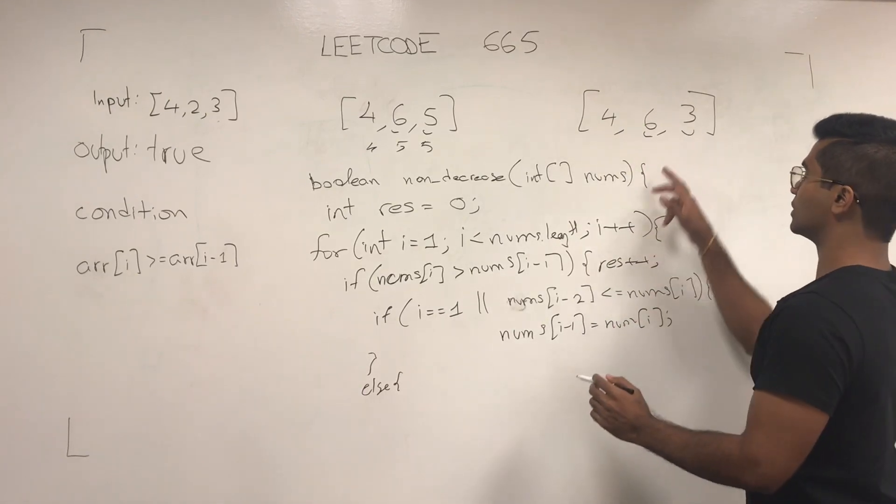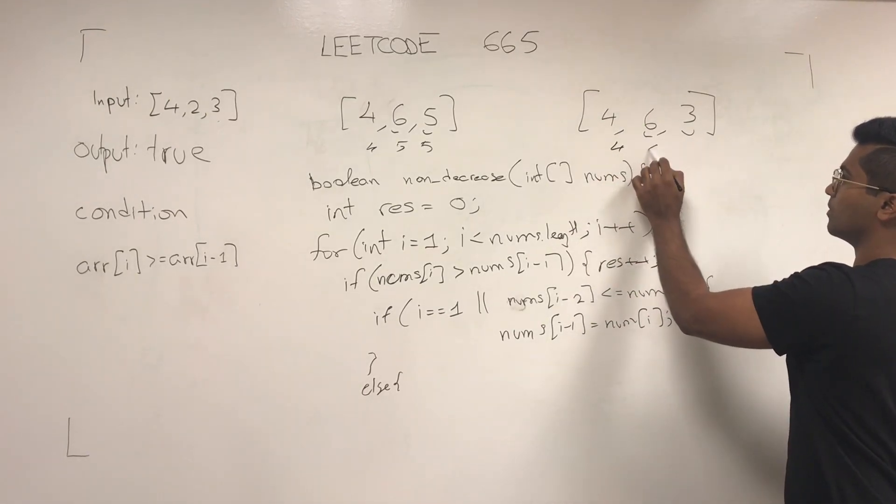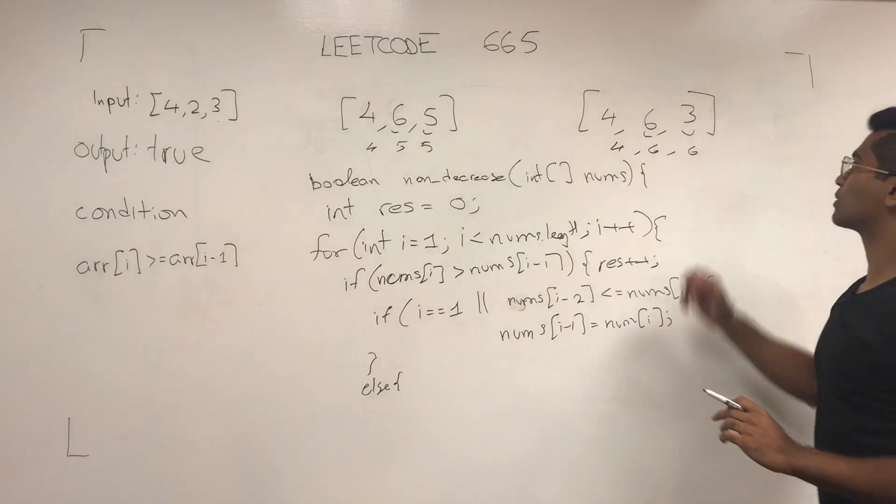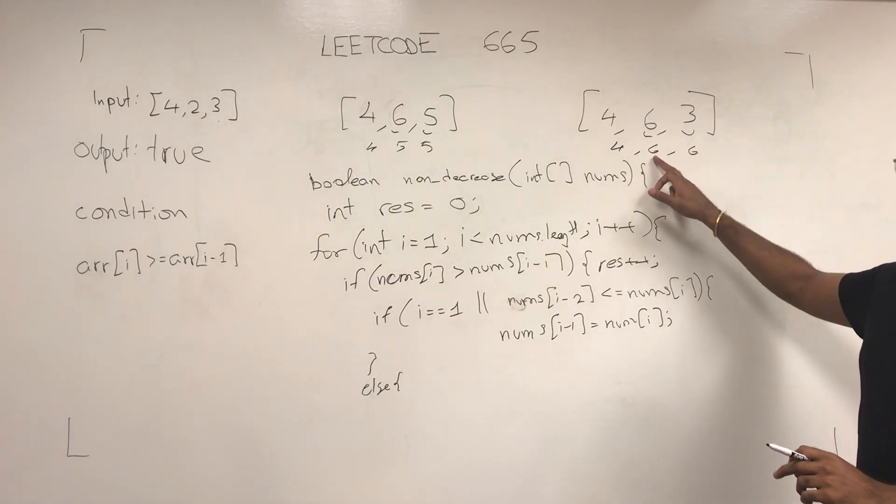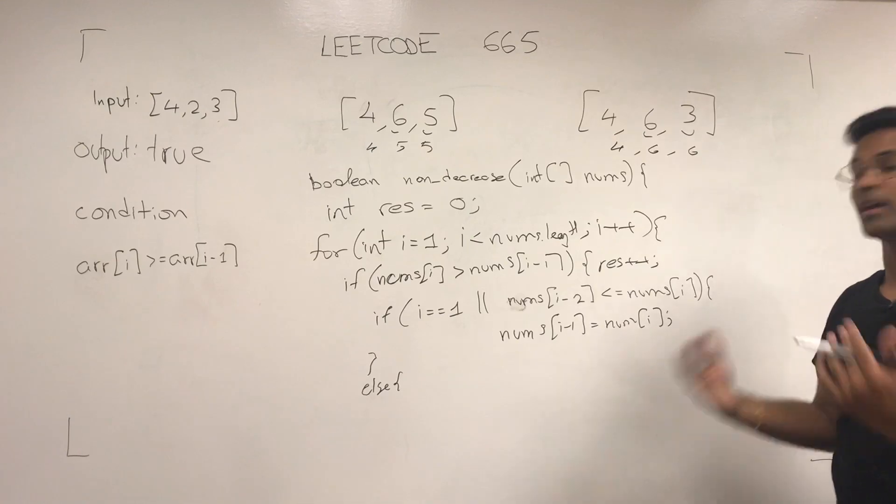Else, what we're going to do is we're going to change this one. So this one is going to become 4, 6, 6. Because what happens if we try changing this to 3, right? It'll be 4, 3, 3. We can't have that.